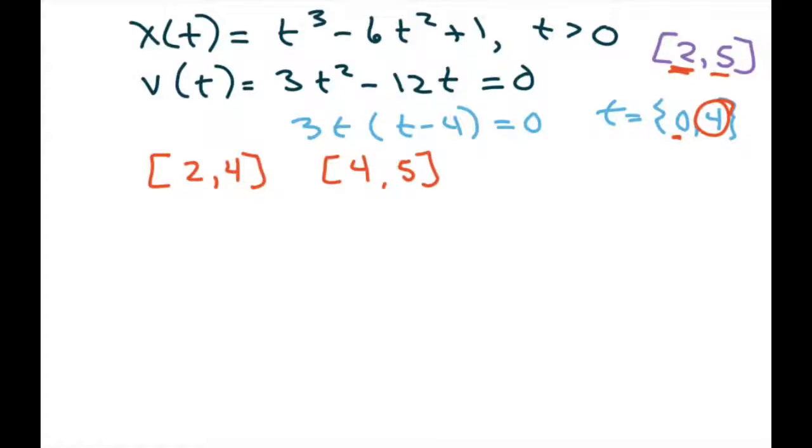All right, and then all you do is go back here and you're doing absolute value of x of 4 minus x of 2, plus the distance here, which would be x of 5 minus x of 4, and that will be your total distance.